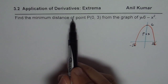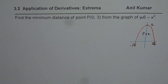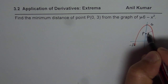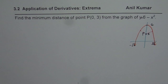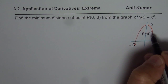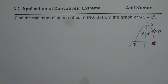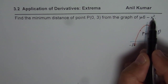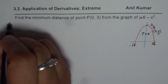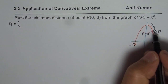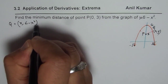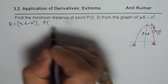We need to find the minimum distance of point P from the graph. The minimal distance will be normal to the graph, so it could be on either side. Since we do not know what that point is, we need to find the point itself. Let us say that point is (x, y) on the graph — call it Q. Since the equation is y equals 6 minus x squared, point Q has coordinates (x, 6 minus x squared). We have point P which is (0, 3).